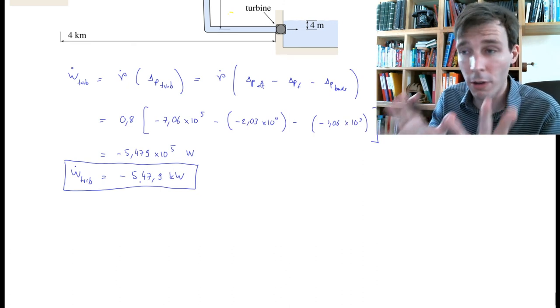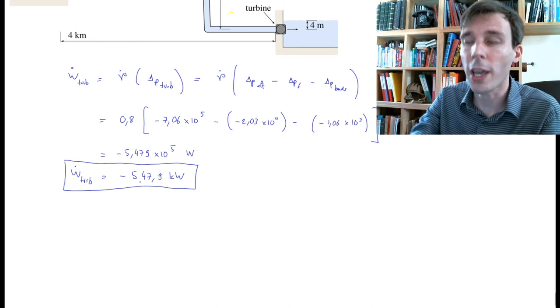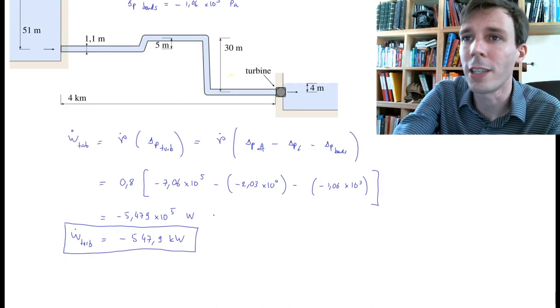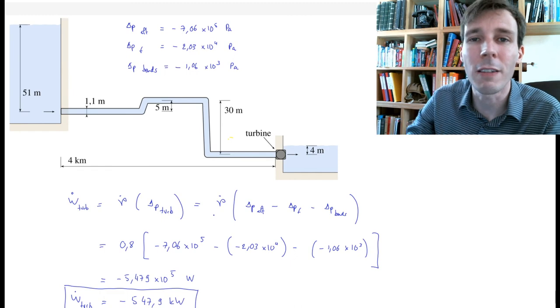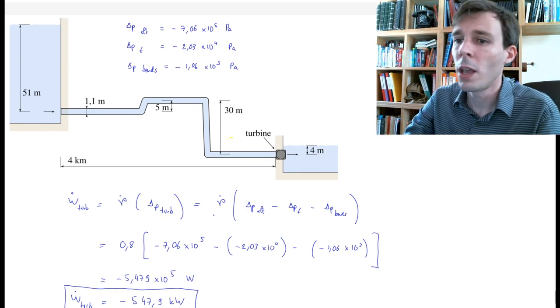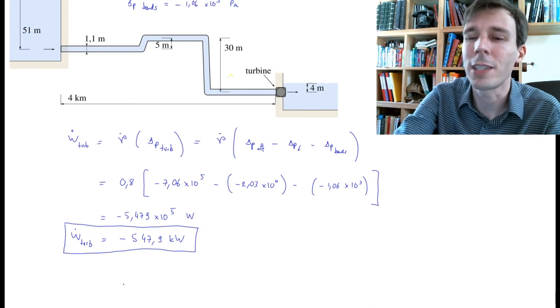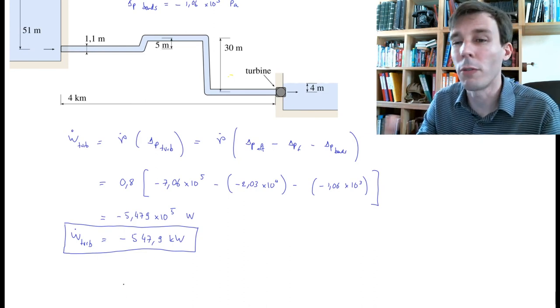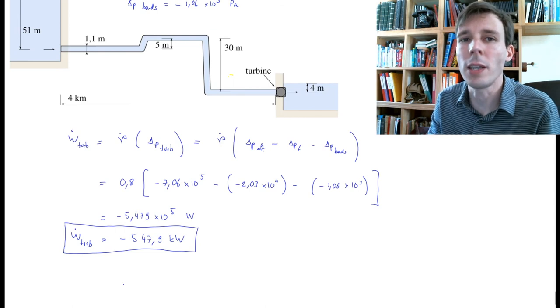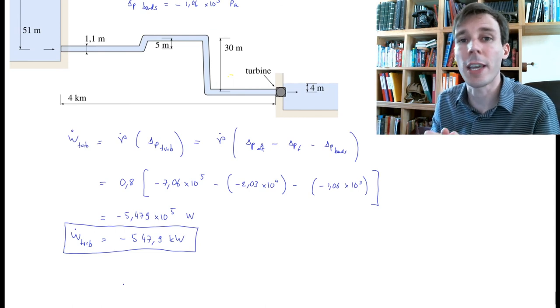None of this is our concern for today. What we want to look at is the net power that is being made available to the turbine. One last remark: this power is negative. This number is negative. This is from the point of view of the water—the water loses in this case 548 kilowatts.